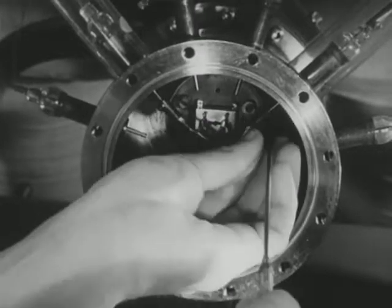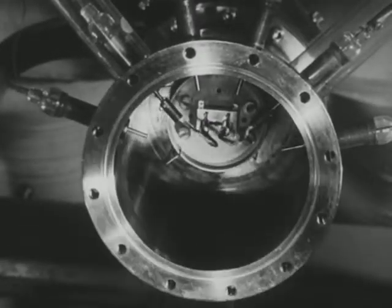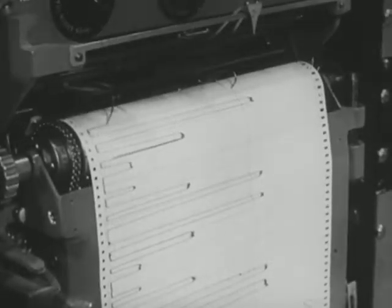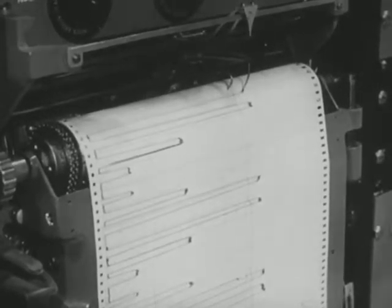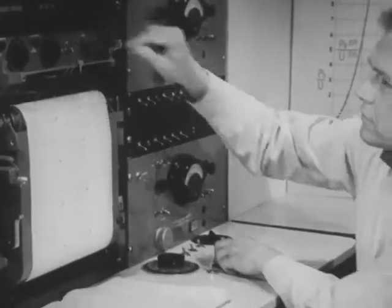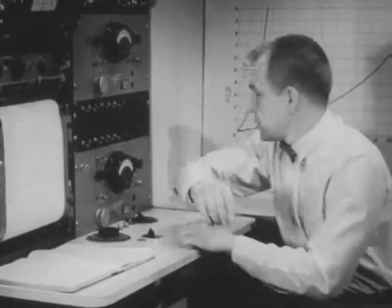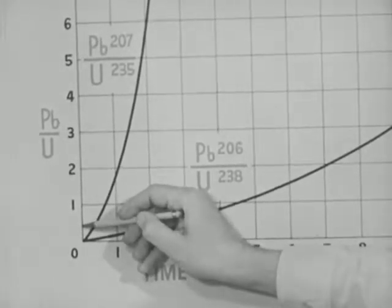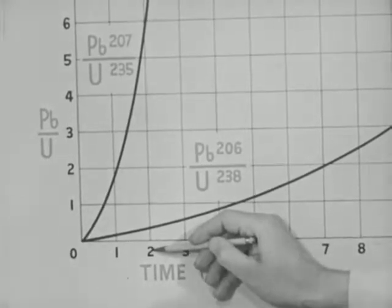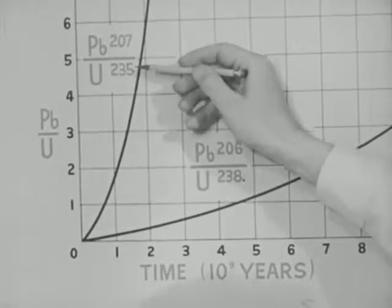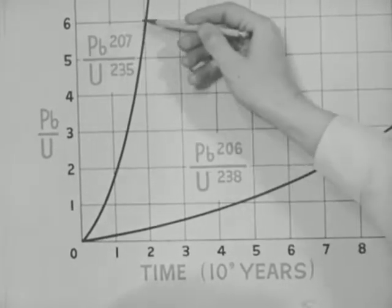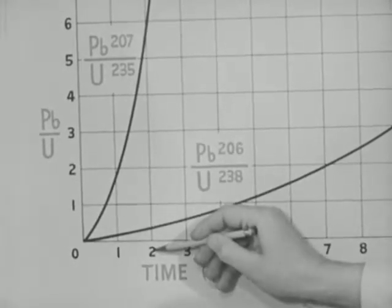Hydrogen sulfide is bubbled through a solution containing the lead. A precipitate of lead sulfide is obtained. The precipitate, weighing five to ten millionths of a gram, is placed on this wire filament. The uranium is concentrated in a solution which is placed upon another wire filament. This instrument is our atom sorter — it's called a mass spectrometer. By placing the wire filaments loaded with the samples of lead and uranium inside it one at a time, we can determine from this record of the operation of the mass spectrometer the amounts of the various isotopes of lead and the amount of uranium contained in the sample. We calculate, in the sample we have just analyzed, a lead-206 to uranium-238 ratio of 0.361. This ratio corresponds to an age of about two times ten to the ninth years. We calculate the lead-207 to uranium-235 ratio to be six, and this corresponds also to an age of about two times ten to the ninth years.